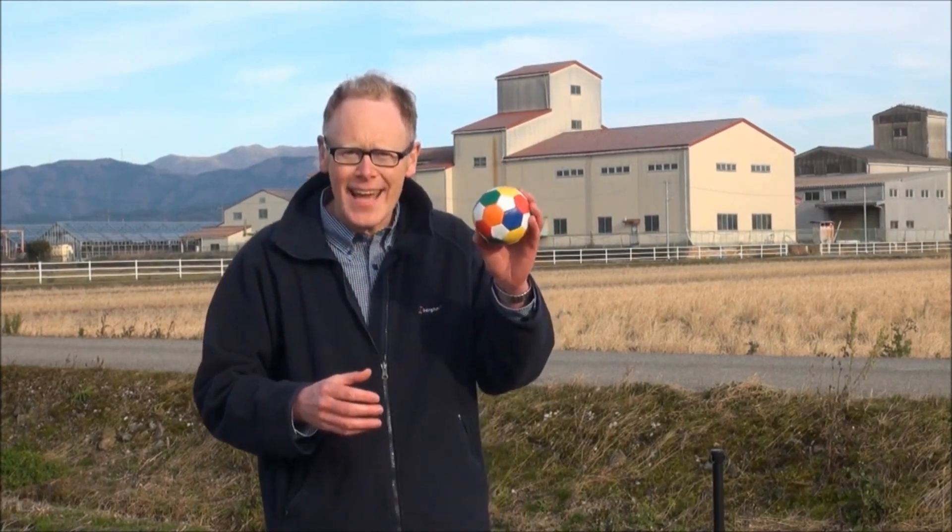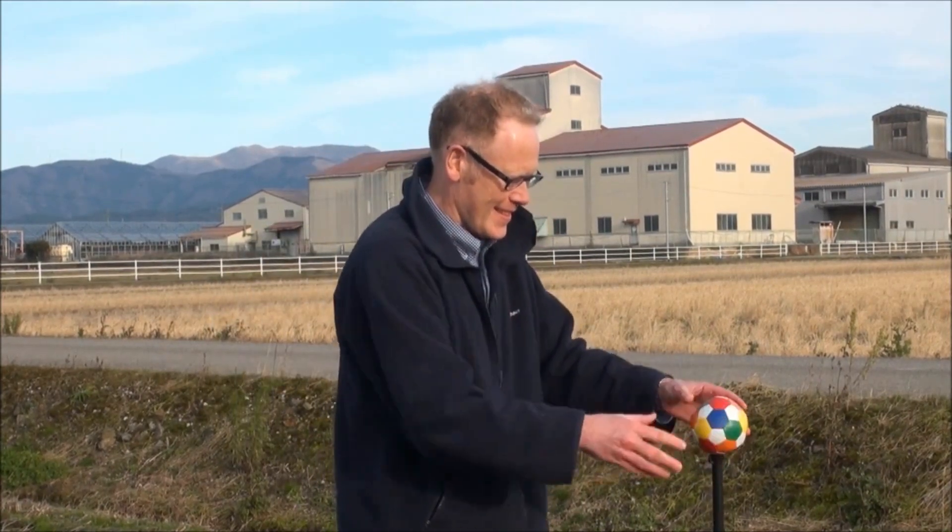This is our Earth. It's ten centimeters in diameter. And this is our Moon. On the same scale, it's 2.7 centimeters in diameter.